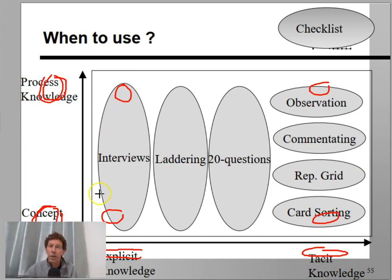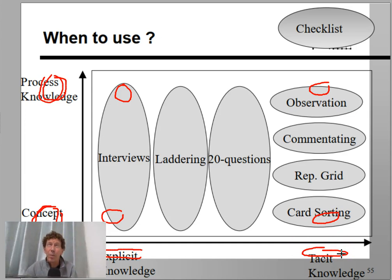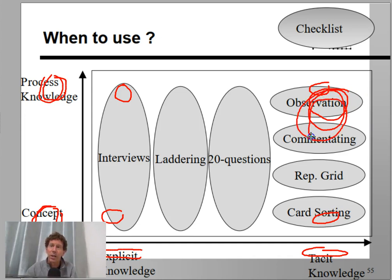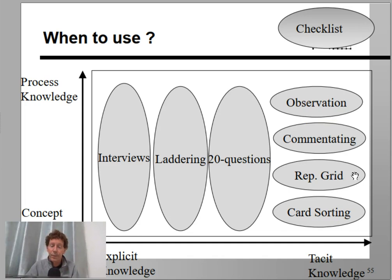This diagram tells you which technique is most suitable for which combination of these two dimensions. For example, if you're dealing with a lot of implicit process knowledge — where people know how to do things but don't really talk about it — you would end up in a specific corner of the diagram, pointing you to the appropriate techniques for that situation.